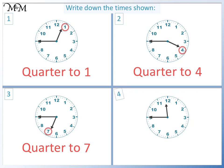Question four. The minute hand is pointing to nine, so the time is quarter to. The hour hand is almost at twelve. So the time is quarter to twelve.